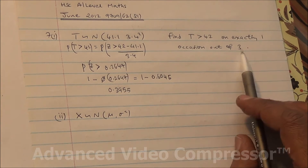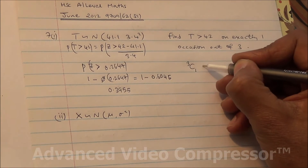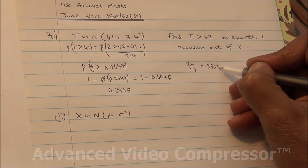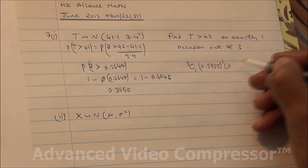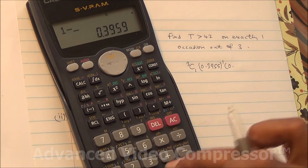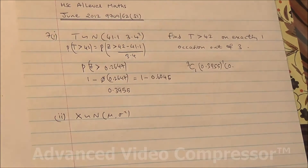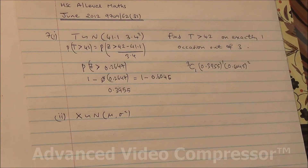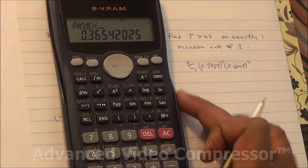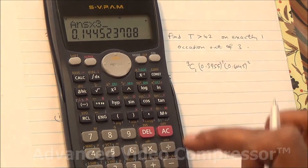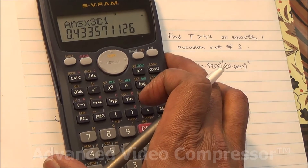For exactly one of the three occasions, we use a binomial distribution. So we compute 3C1 × (0.3955)^1 × (1 - 0.3955)^2 = 3C1 × (0.3955) × (0.6045)^2. This gives 0.4335, so the answer is approximately 0.434.